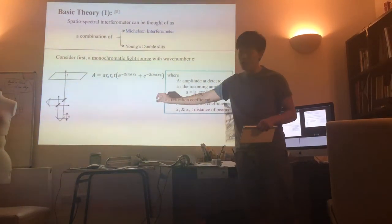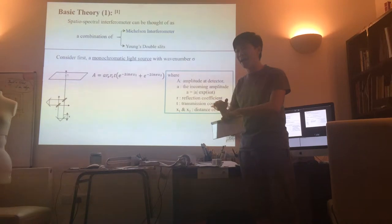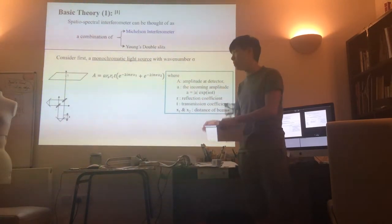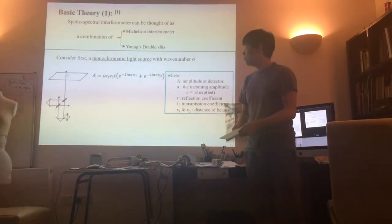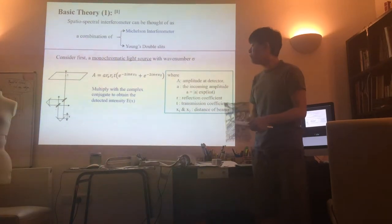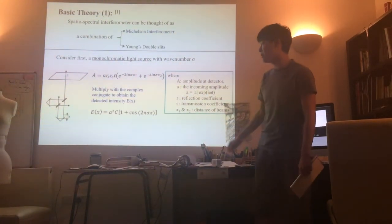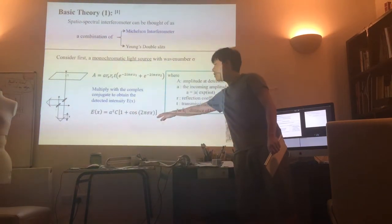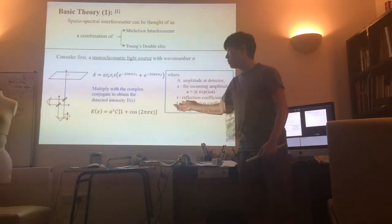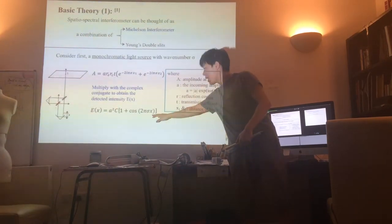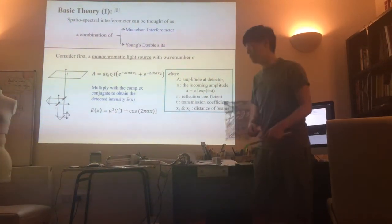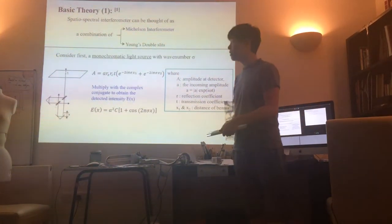The X1 and X2 here are the optical path lengths in the two different arms. By varying that X there, we alter the optical path difference between these two light beams. Hence, if we multiply by the complex conjugate, we get the intensity, which has the X dependence, meaning the OPD dependence.